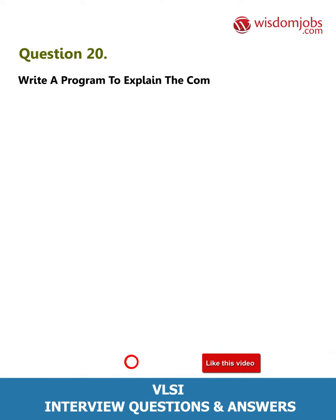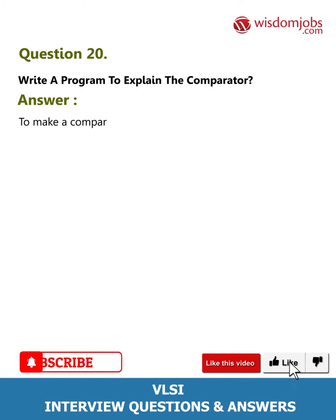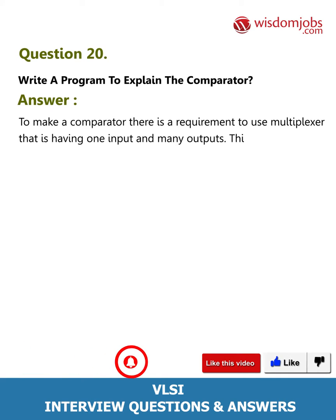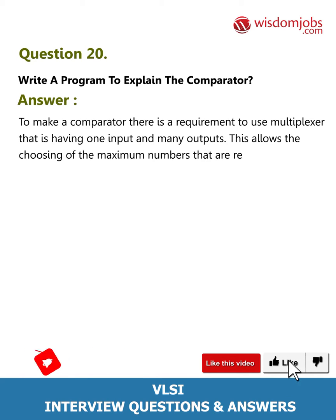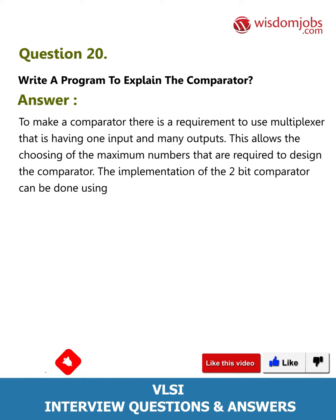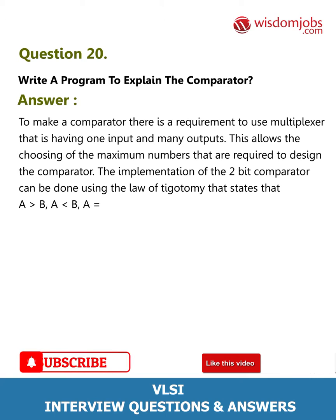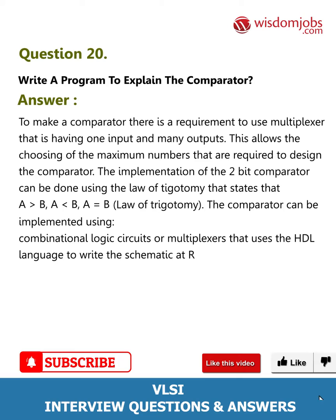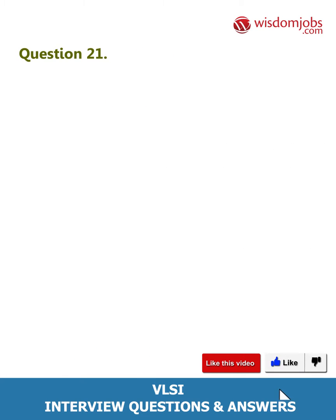Question 20: Write a program to explain the comparator. To make a comparator there is a requirement to use a multiplexer that has one input and many outputs, allowing the choice of the maximum numbers required to design the comparator. The implementation of the two-bit comparator can be done using the law of trichotomy, which states: A greater than B, A less than B, A equals B. The comparator can be implemented using combinational logic circuits or multiplexers that use HDL language to write the schematic at the gate level.